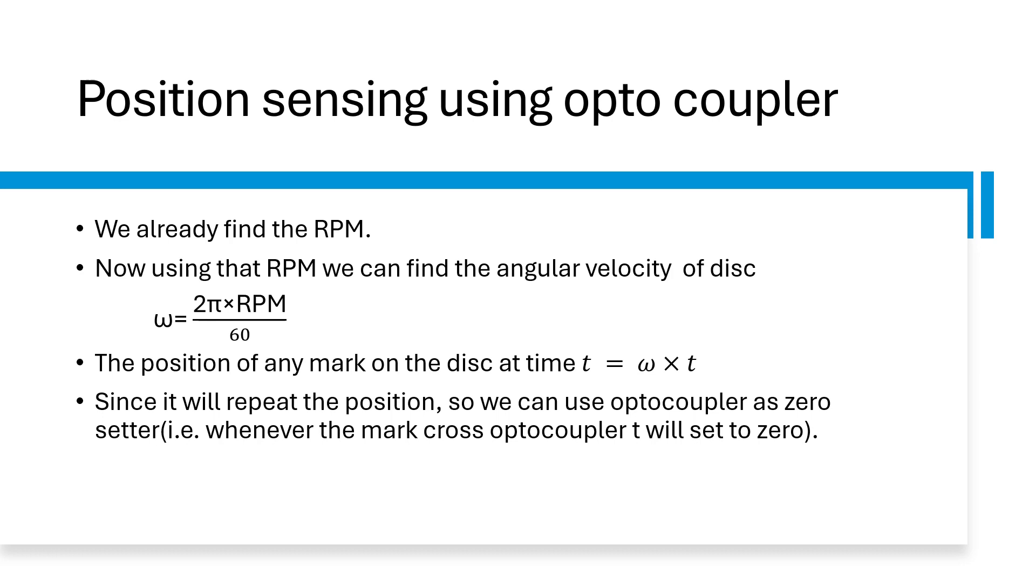So for any mark on the disk we can find the displacement which is omega multiplied by the time taken. And since we know that that mark will repeat its position after some time, we will set the optocoupler as a zero setter. Like whenever that mark will cross the optocoupler, it sets the time to be zero. Then it will again show the same positions for the new rotation.